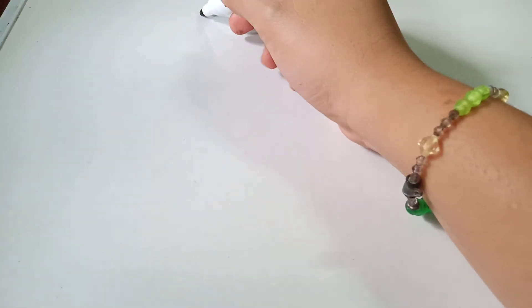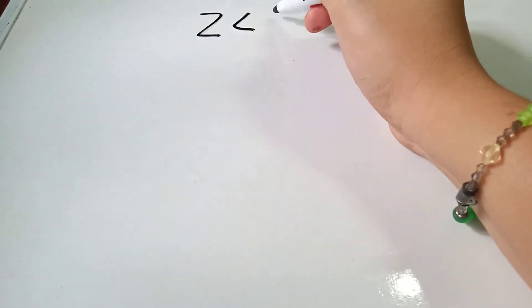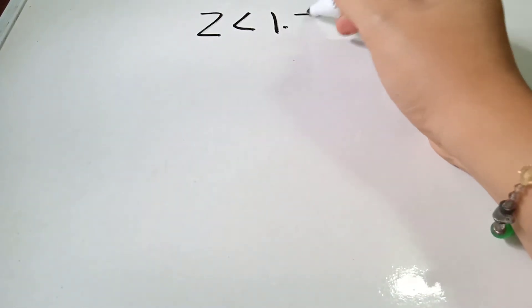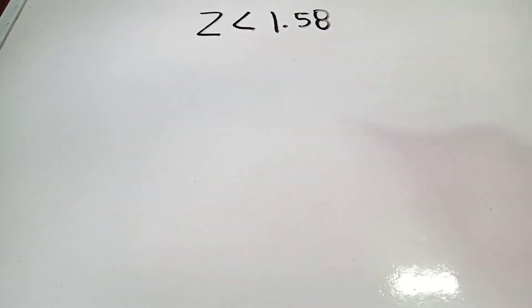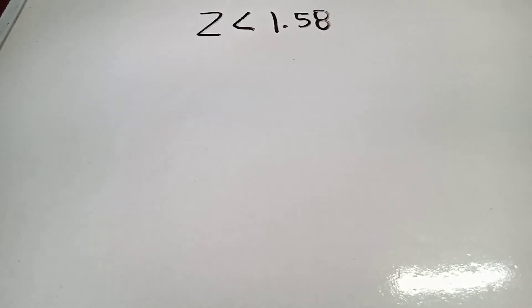Welcome again to another example of using the Z-table. If I have a given of Z less than 1.58, what will be the value of 1.58 in my table? First, we need to grab the normal curve.